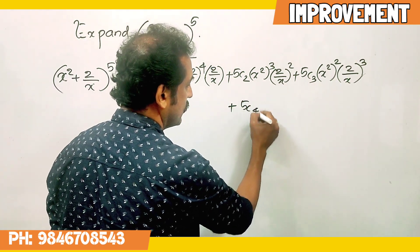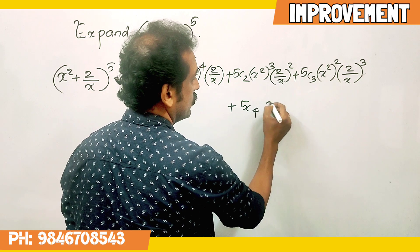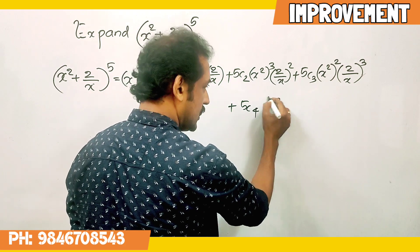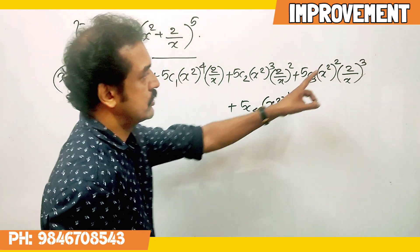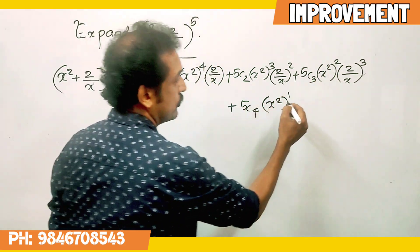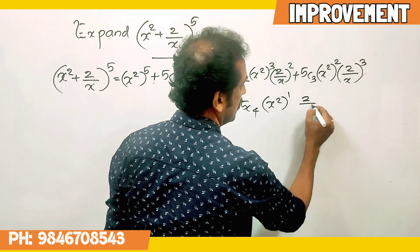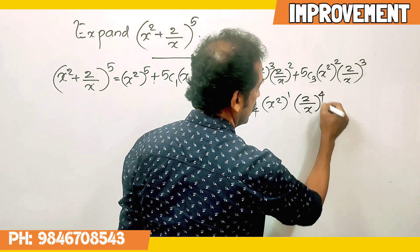Plus 5C4, x squared raise to 1, into 2 by x whole raise to 4.